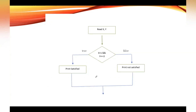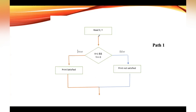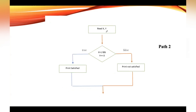According to this flowchart, we can find and show all possible paths that can be executed. If the condition gets true, this is one possible path the code will execute. If the condition is false, this is another possible path that can be executed. So according to this example, we can have two possible paths to execute the code.